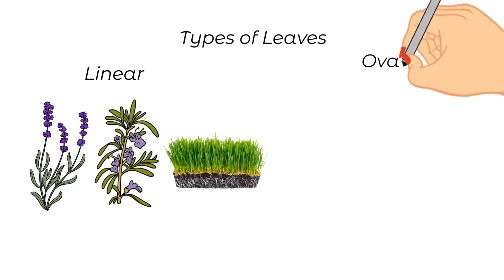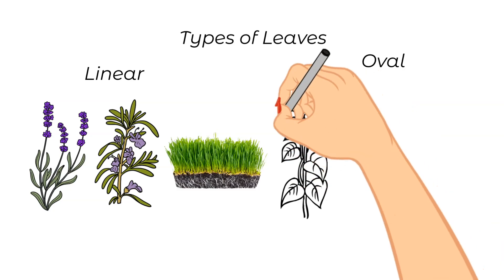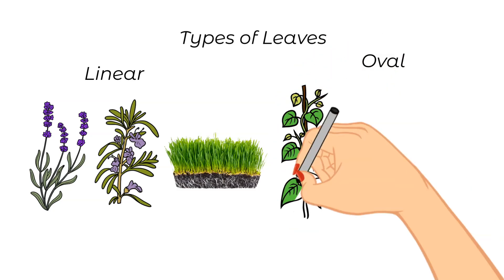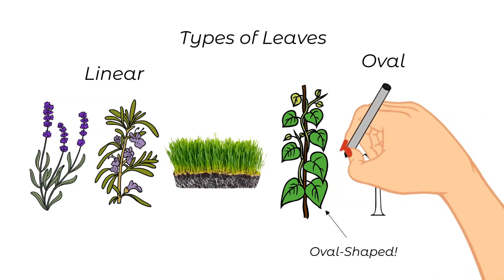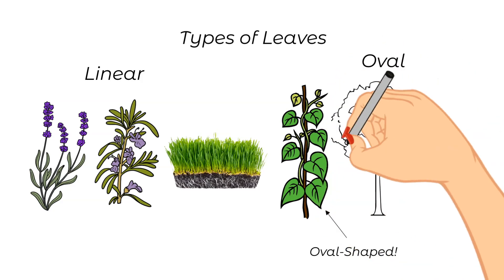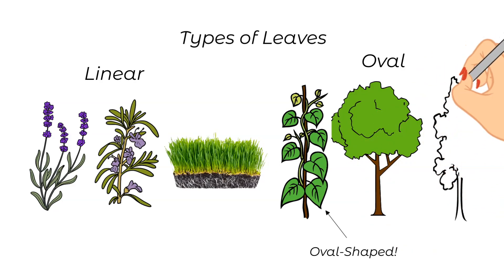Next up are oval leaves. The rule with oval leaves is they are wider at the base than they are at their midpoint and they gradually become thinner as they reach the top. Many of these deciduous trees that we talked about, the ones that lose their leaves in the winter, have oval shaped leaves.